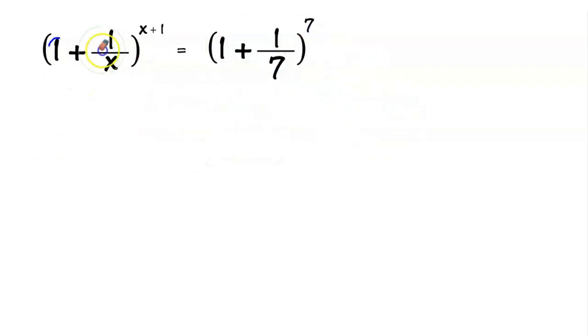So to solve this equation, we need to make the denominator to the left hand side here same as the power. For example, x plus 1 here, and x plus 1 the power. Then we can say that the power or the denominator is equal to 7. So how can we do that?